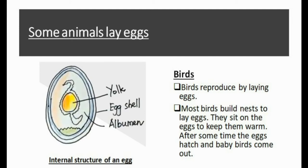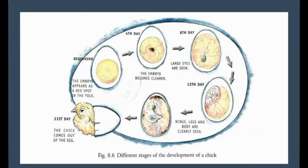This figure shows the different stages of development of a chick. The chick is formed and grows inside the yolk. The growing baby is called an embryo. The chick embryo uses the yolk as its food. The embryo develops only if the egg is kept warm, and after 21 days the chick comes out of the egg.